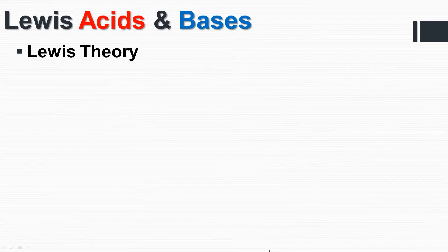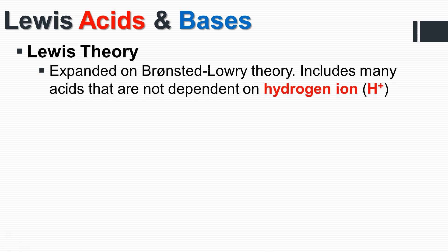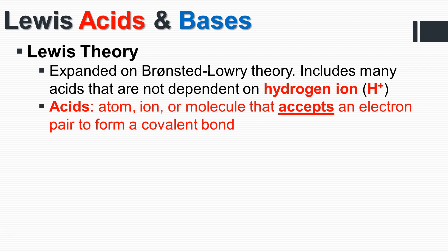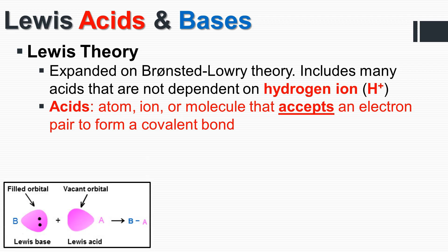Lewis acids, on the other hand, represent an even broader definition that expands to include compounds that don't even involve hydrogen. According to Lewis, a Lewis acid is an atom, ion, or molecule that accepts an electron pair — we're now talking about electrons moving from place to place, not protons. A Lewis acid has a vacant electron orbital that electrons can fill.